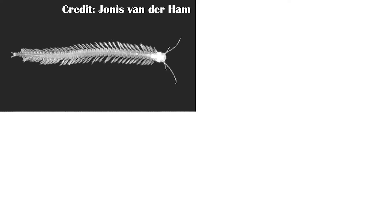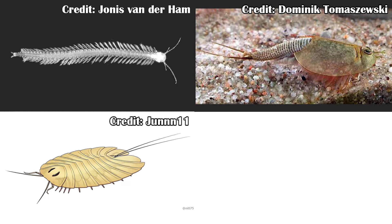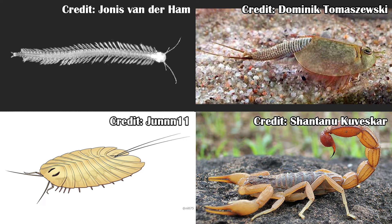Even before Parioscorpio was found and called a scorpion, it had been thought to belong to a number of different groups because people knew about the fossil but didn't really look at it in that great of detail. Some of these include a Remipede or Branchiopod crustacean in 1985, a Cheloniellid — which is really closely related to trilobites — in 2014, or a scorpion in the paper that it was named in in 2020.